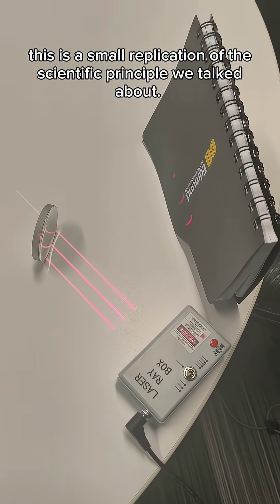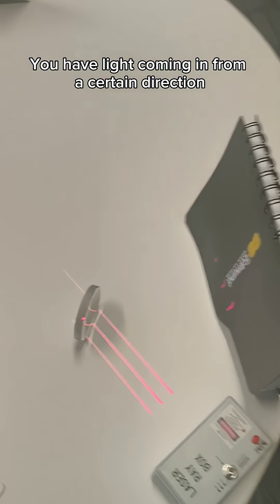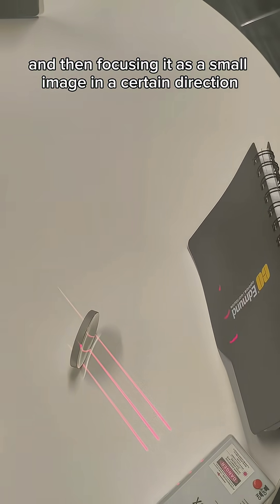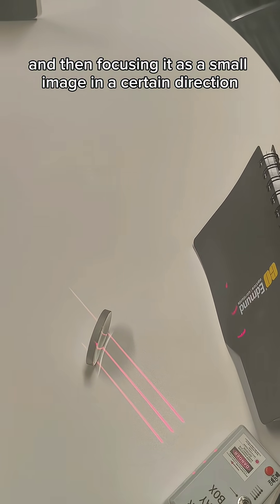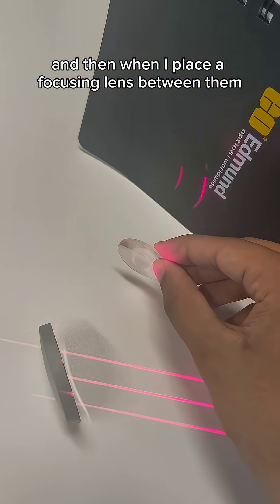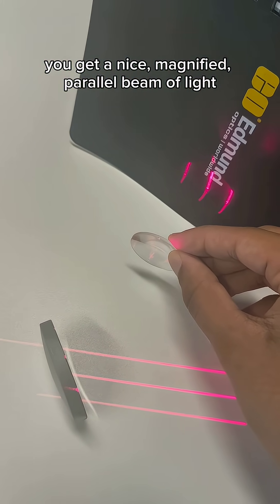This is a small replication of the scientific principle we talked about. You have light coming in from a certain direction, then a primary mirror collecting all that light and focusing it as a small image. When I place a focusing lens between them, you get a nice magnified parallel beam of light.